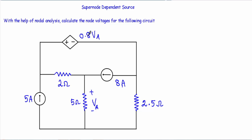The dependent source is a voltage-dependent voltage source, 0.8 VA, where VA is the voltage across this 5 ohm resistor. Between this node and this node, the circuit contains a voltage source without a resistor, therefore this node and this node will be merged to form our super node.